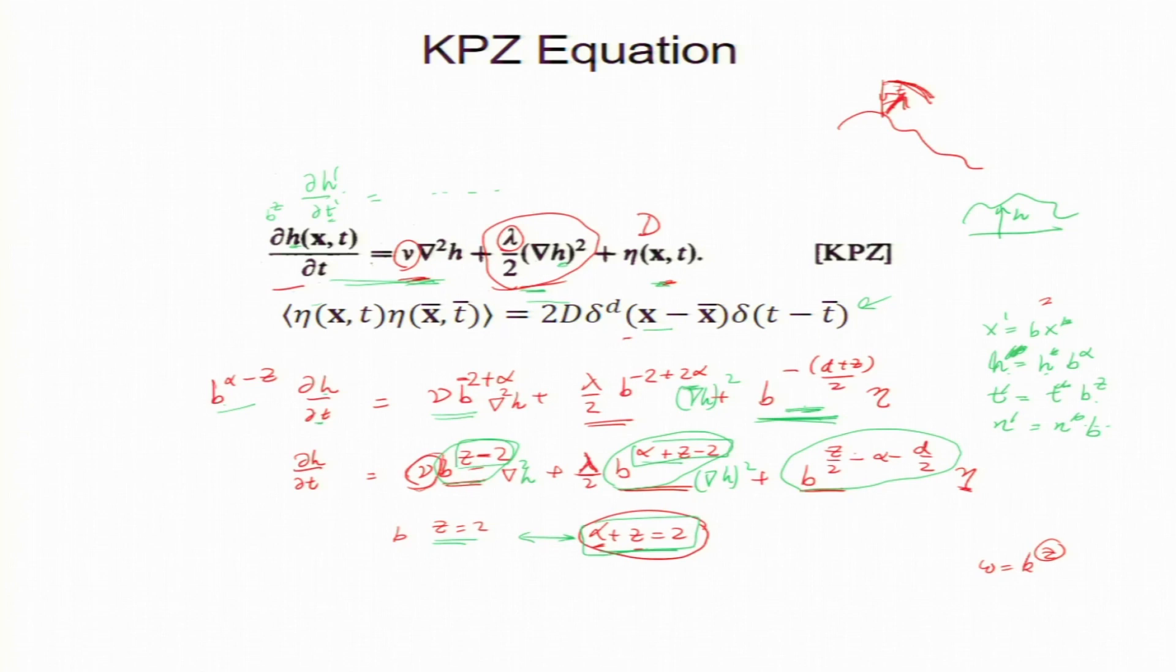I mean combine these 2 relation then alpha is 0 which is disaster. You have then surface roughness which is captured by alpha is there is no surface roughness. In fact, h is not changing with time. h is as smooth as before.